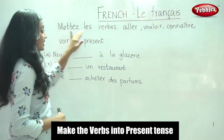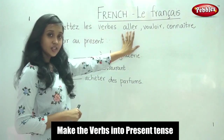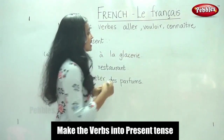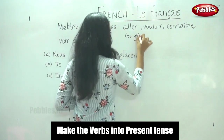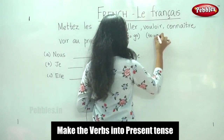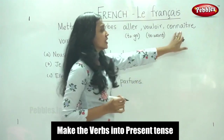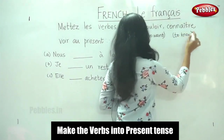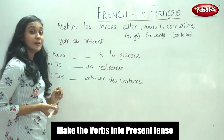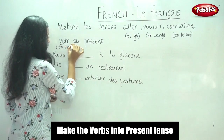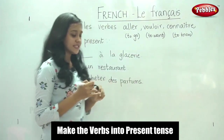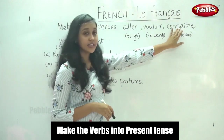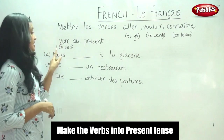The question here is: Mettez le verbe. Make the verbs. Aller — do you remember the verb Aller? It means to go. Vouloir — we learned this verb; it means to want. Connaître — do you remember Connaître? It means to know. And Voir — do you remember Voir? It means to see. So these are the four verbs: Aller means to go, Vouloir means to want, Connaître means to know, and Voir means to see.